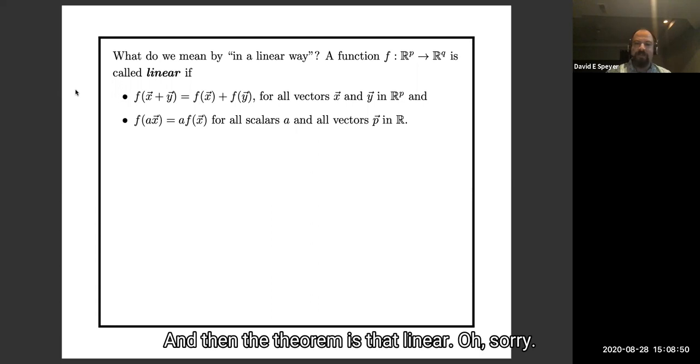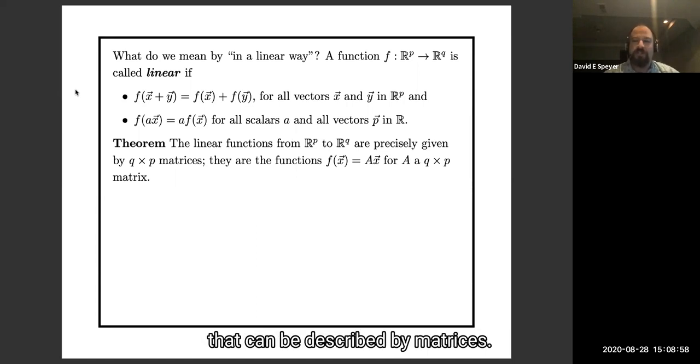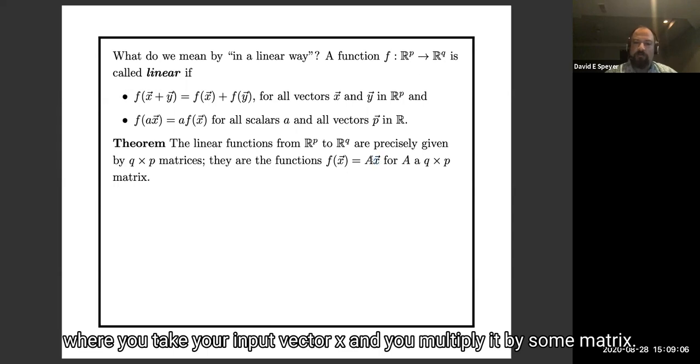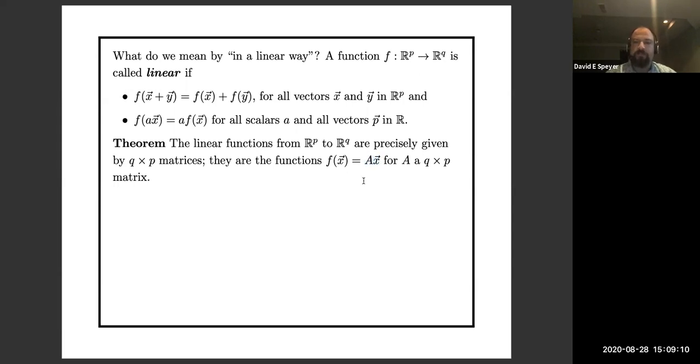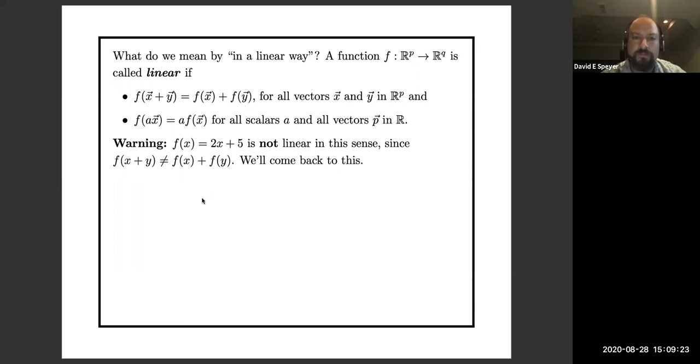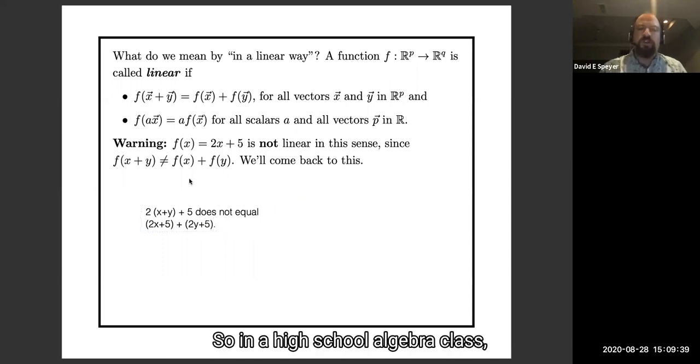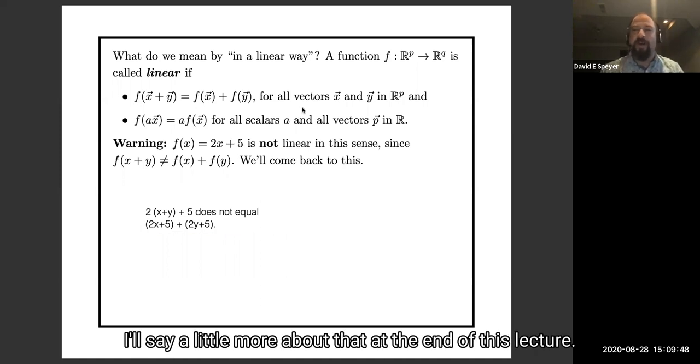And then the theorem is that linear functions are exactly the functions that can be described by matrices. So they are exactly the functions where you take your input vector x and you multiply it by some matrix. Warning, the function f of x equals 2x plus 5 is not linear in this sense, because 2x plus 5 does not equal 2x plus 5 plus 2y plus 5. So in a high school algebra class, you would call 2x plus 5 a linear function, but now we don't. You should just learn to live with that. I'll say a little more about that at the end of this lecture.